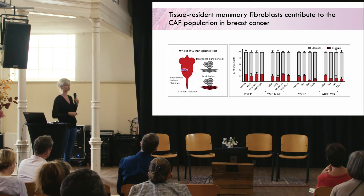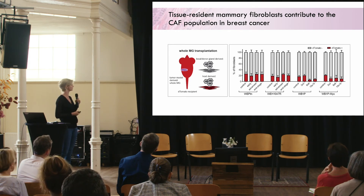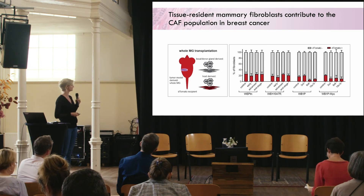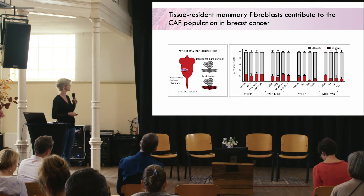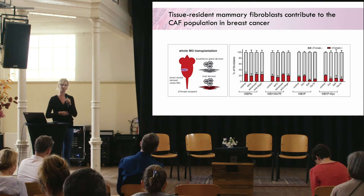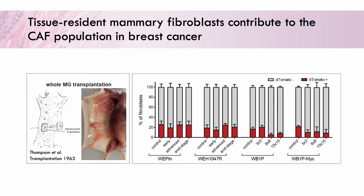The next theory we tested was that tissue-resident mammary fibroblasts actually contribute to the CAF population in breast cancer. For this we did whole mammary gland transplantation — different from the MEC transplantation because you're transplanting not only the mammary epithelial cells but the entire mammary gland, basically giving these mice an additional mammary gland. This technique was already described in the 1960s in a very detailed paper, and we were able to use that to set up these transplantations in the lab.